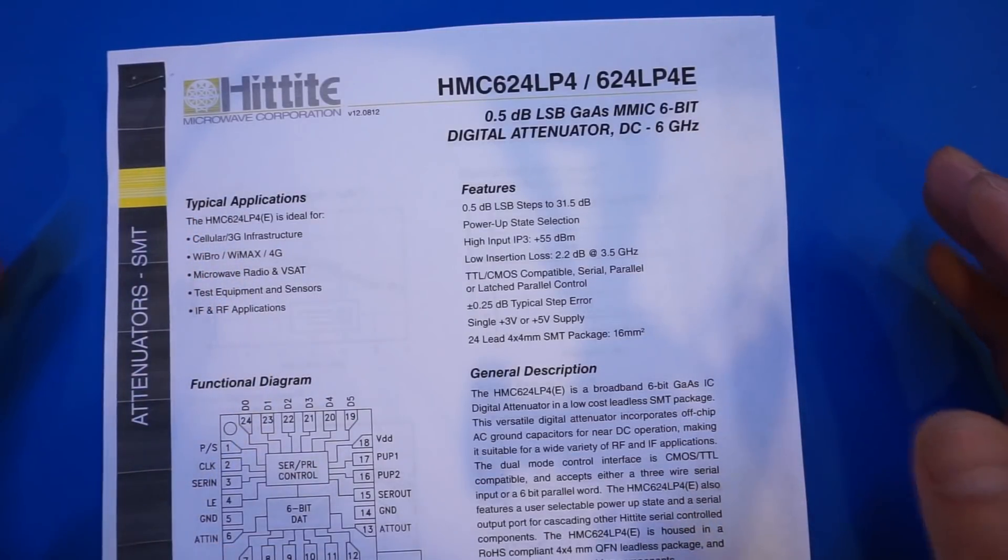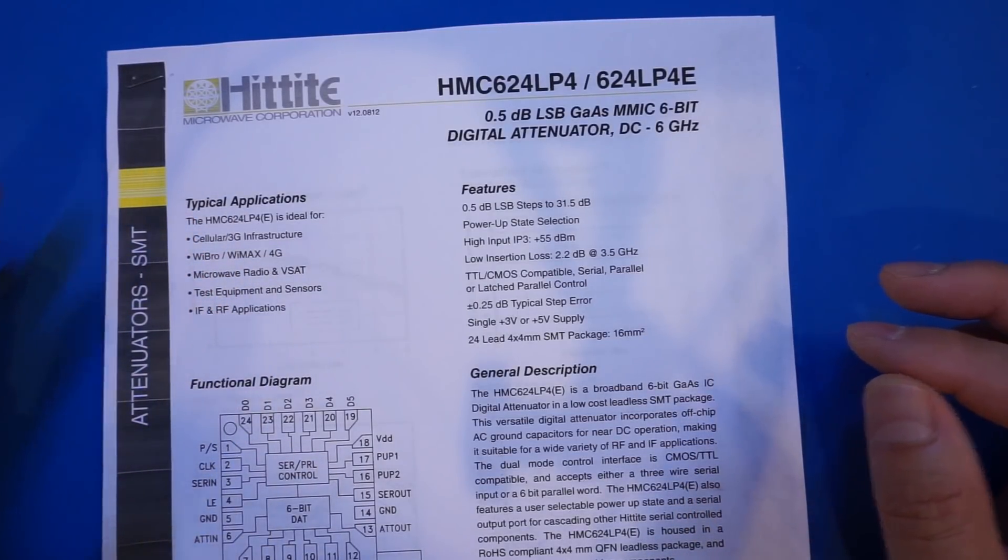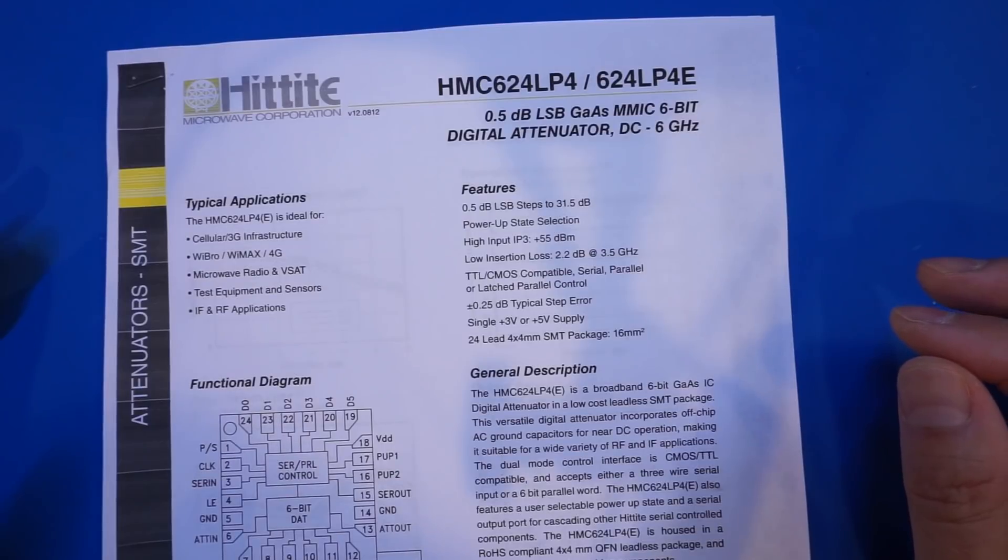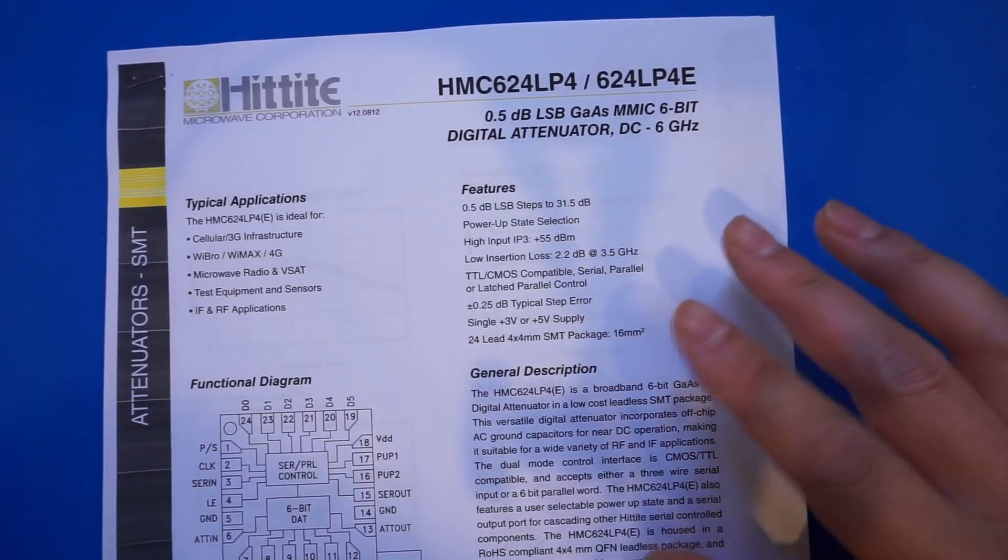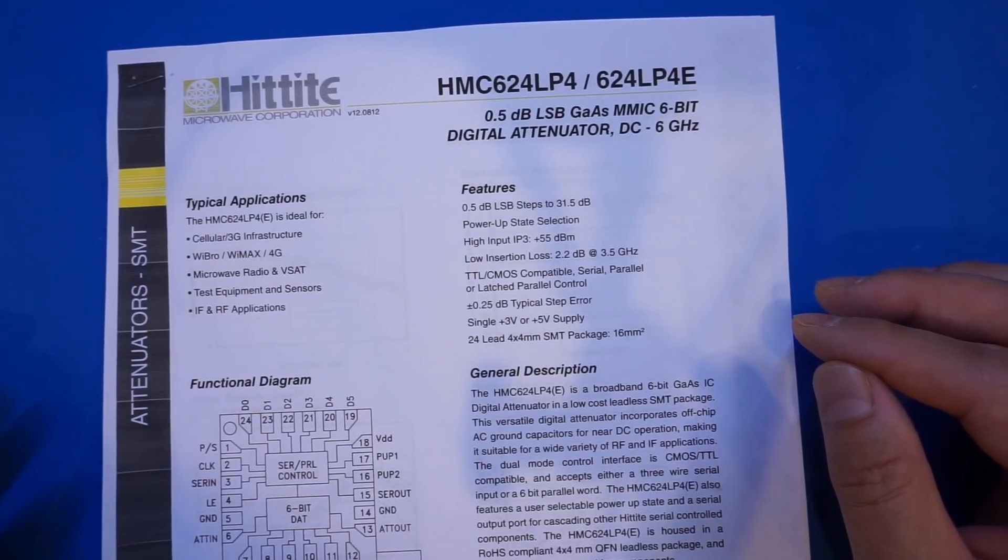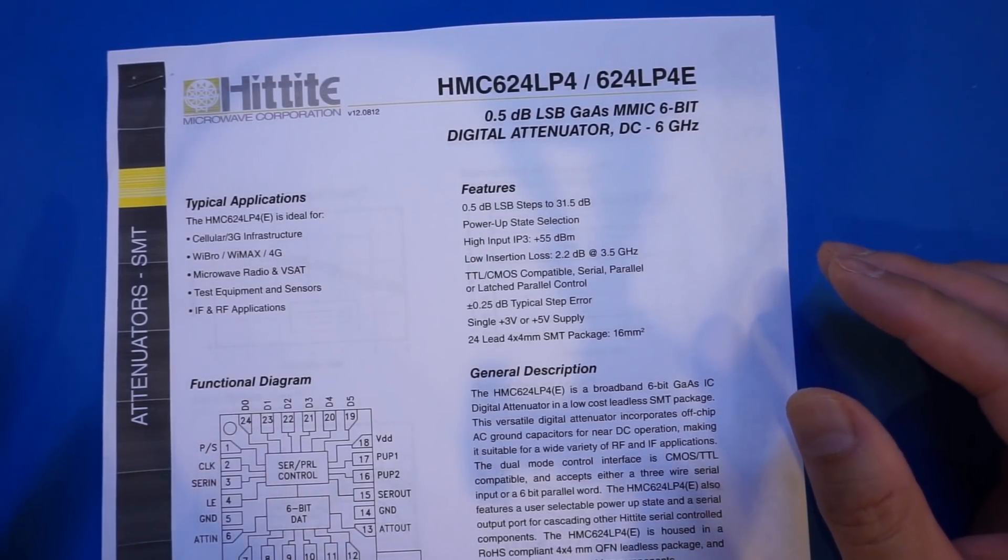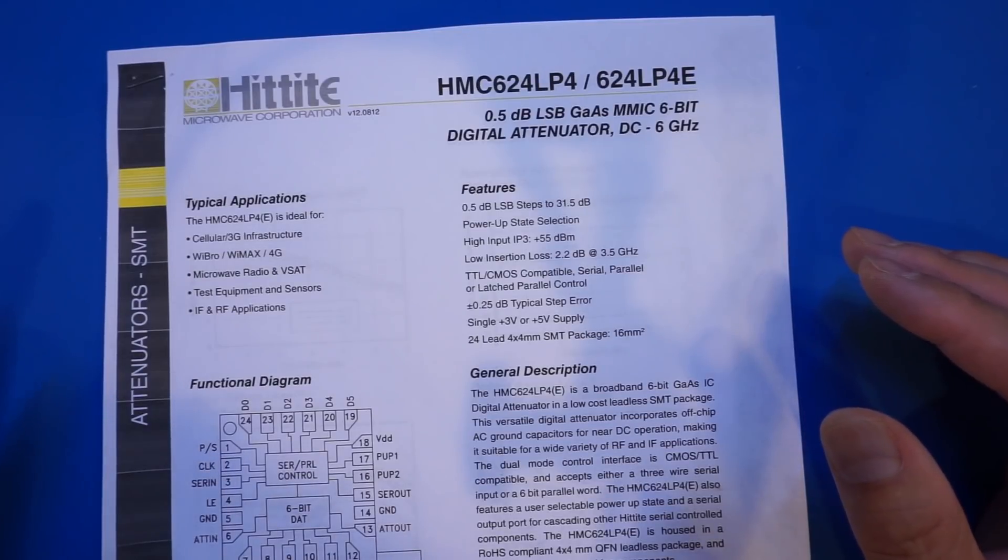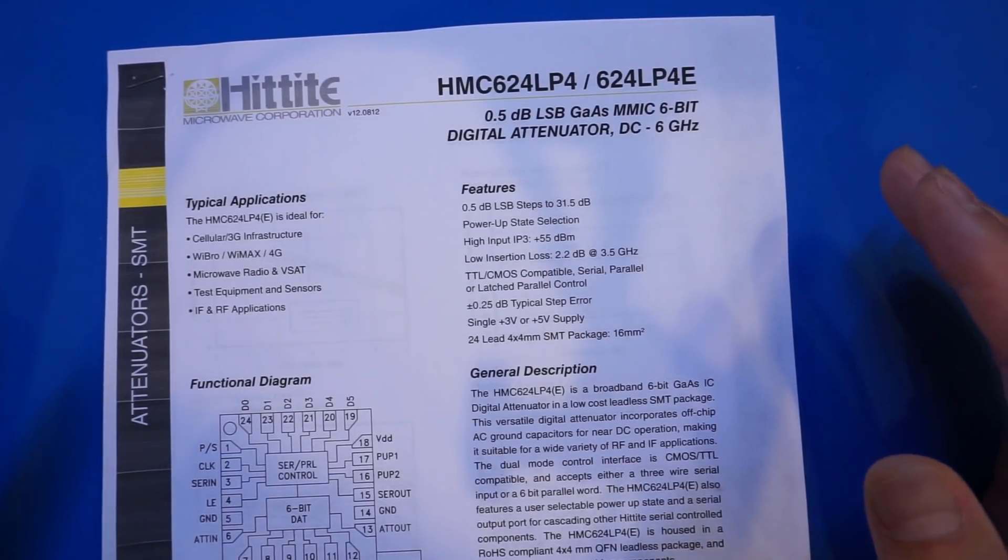Of course, MMICs are not limited to be just using gallium arsenide. And you can also find them made with gallium nitride or silicon germanium. And because of the feature size have shrunk significantly in recent years, there are actually MMICs built using the traditional silicon process, which has major cost advantages over the semiconductor materials mentioned earlier.